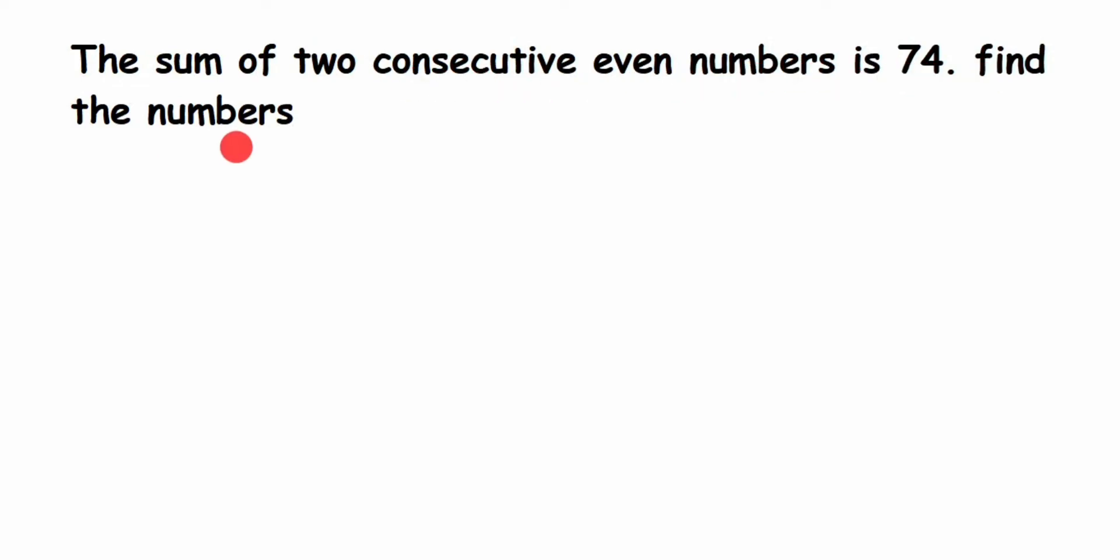Before we solve this, let's understand what consecutive means. Consecutive means numbers just one after the other, like 1, 2, 3, 4 or 7, 8, or 9, 10, 11, but there should not be a gap between the numbers. Here they're talking about two consecutive even numbers.